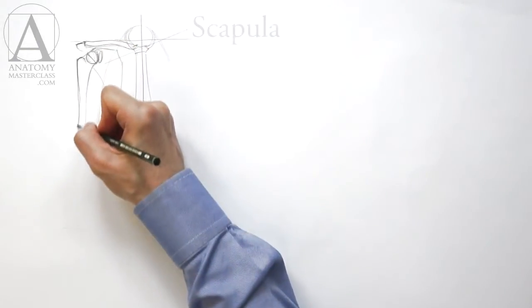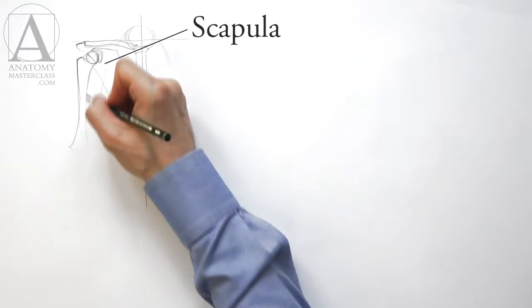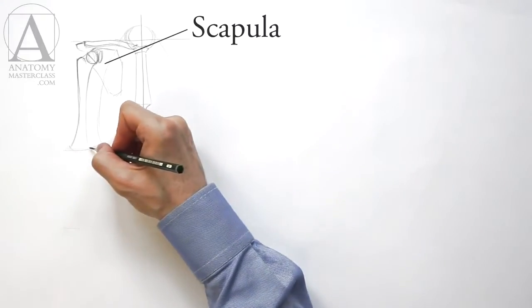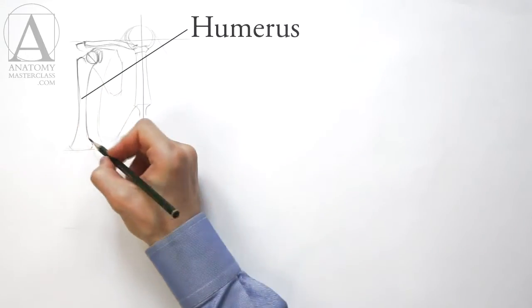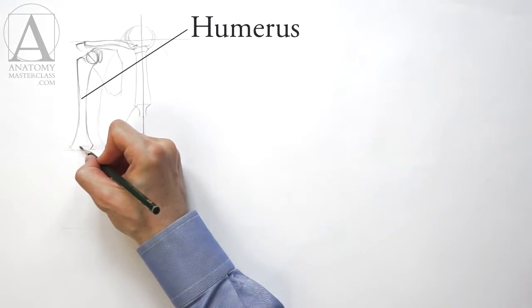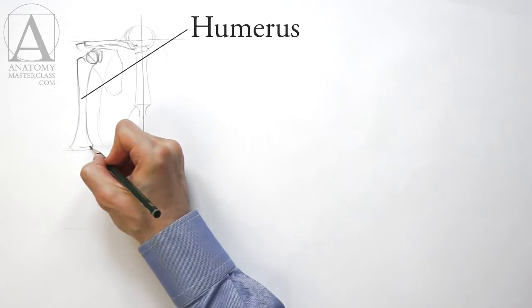The shoulder blade, or scapula, has a triangle shape. The upper arm bone, which is called the humerus, is connected to the shoulder blade via the ball and socket joint of the shoulder.